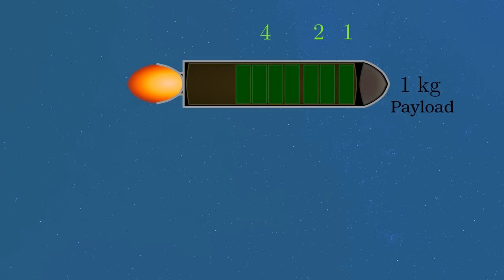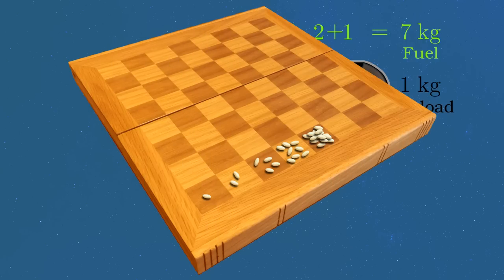We need 4kg for the minute before that, 8 before that, and so on. The amount of fuel required grows exponentially with the amount of time the rocket accelerates for, like the grains of rice on a chessboard.